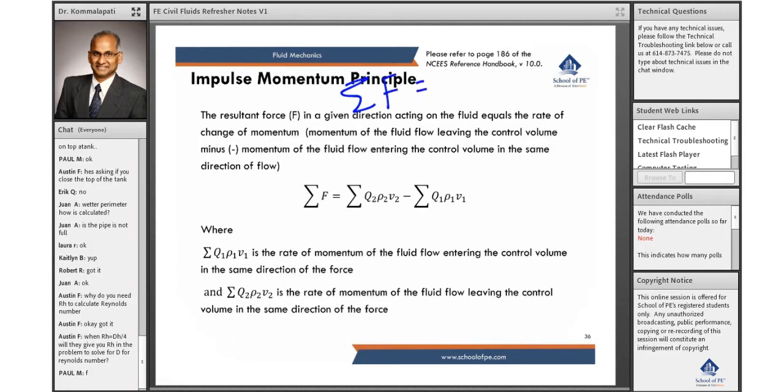The change in momentum will give you the net force. So what they would say is the net force caused by this dynamic system is equal to change in momentum: M2V2 minus M1V1.